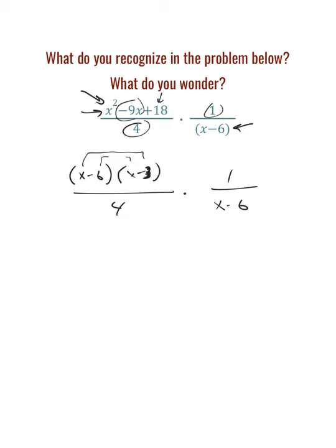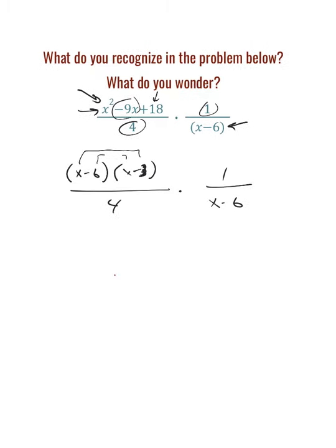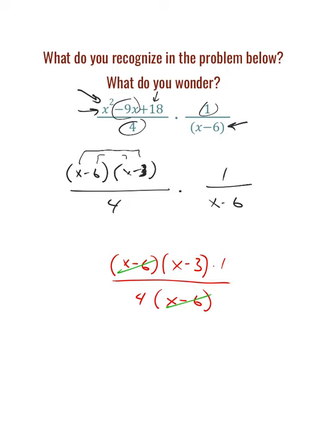We can rewrite that in factored form as x minus 6 times x minus 3, and we still have that x minus 6 there. Combining all of these, my numerator is really x minus 6 times x minus 3, and my denominator is 4 times x minus 6. I don't want to distribute the 4 because I already have x minus 6 in numerator and denominator. So I'm left with a numerator of x minus 3 and a denominator of 4 — that is our simplest form and our final answer.